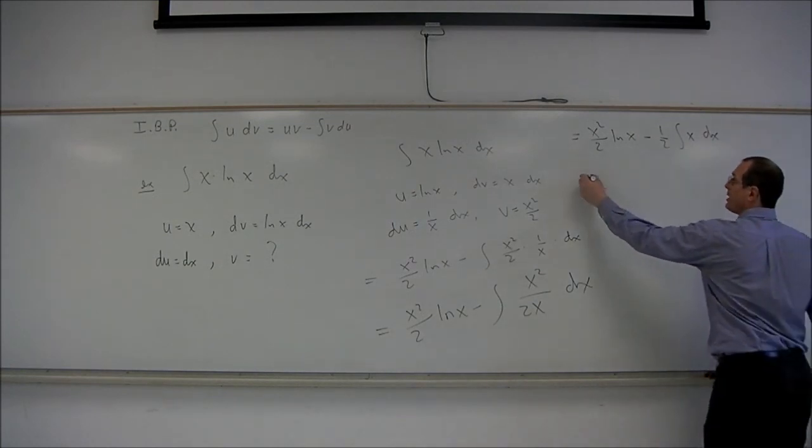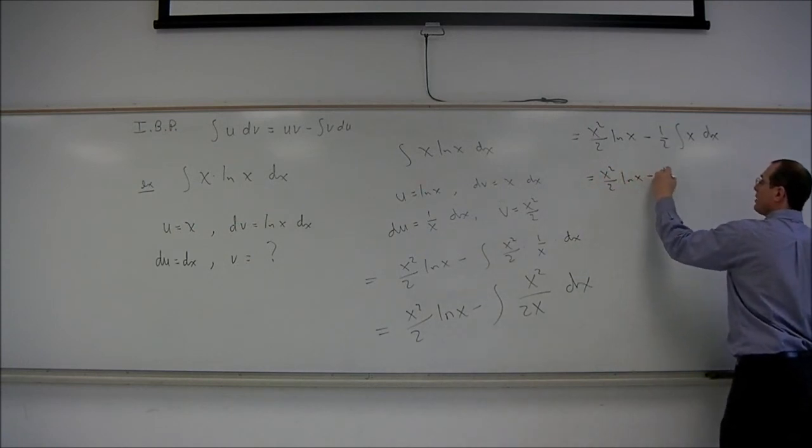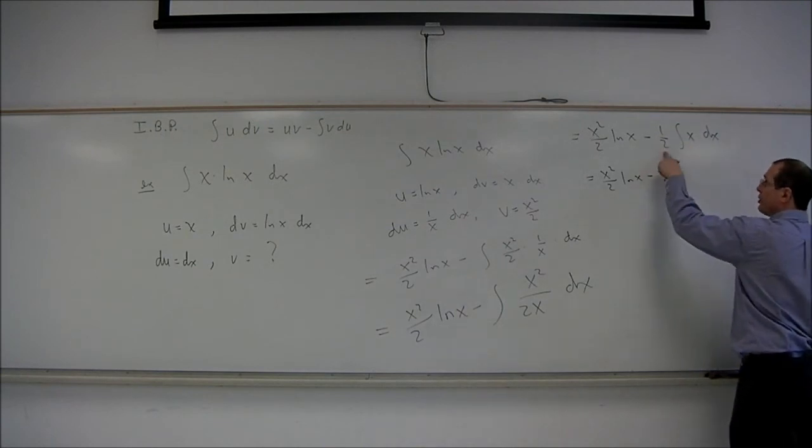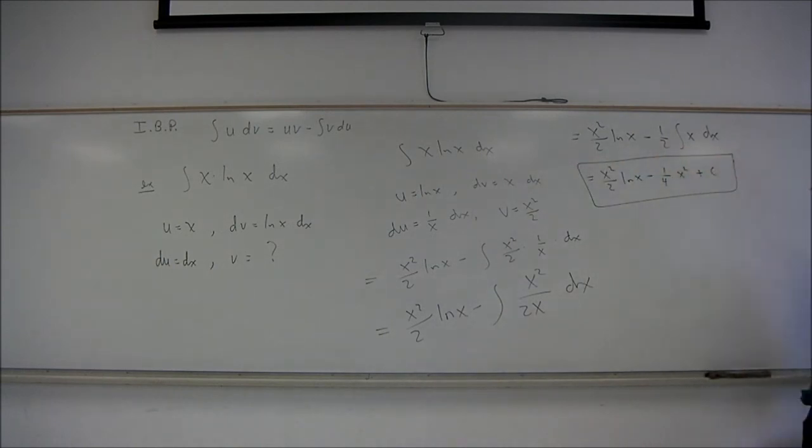So the final answer is going to look like x squared over 2 log x, minus the integral of x is x squared over 2, and there's a 2 there already, so one fourth x squared plus c.